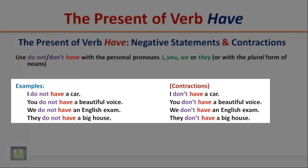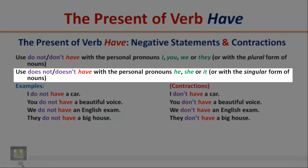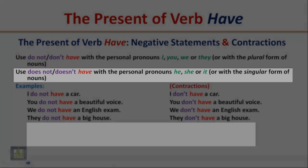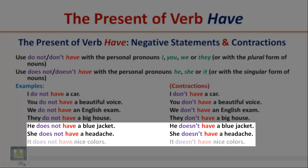They do not have a big house / They don't have a big house. Use 'does not have' or 'doesn't have' with the personal pronouns he, she, or it, or with a singular form of nouns. Examples: He does not have a blue jacket / He doesn't have a blue jacket. She does not have a headache / She doesn't have a headache. It does not have nice colors / It doesn't have nice colors.